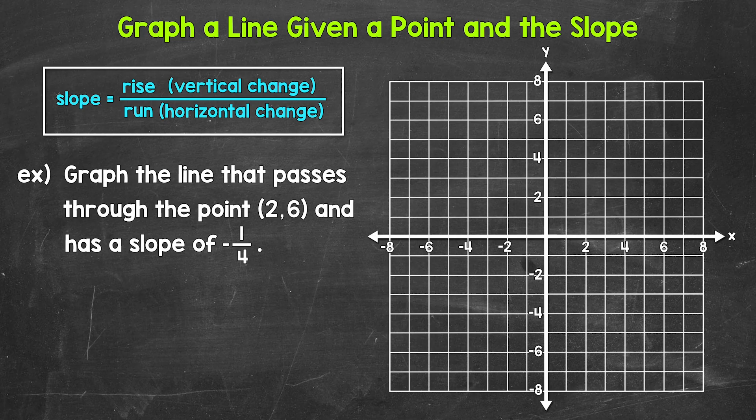2 is our x-coordinate and 6 is our y-coordinate. So we need to go over to 2 on the x-axis and up 6. So we plot our point right here.